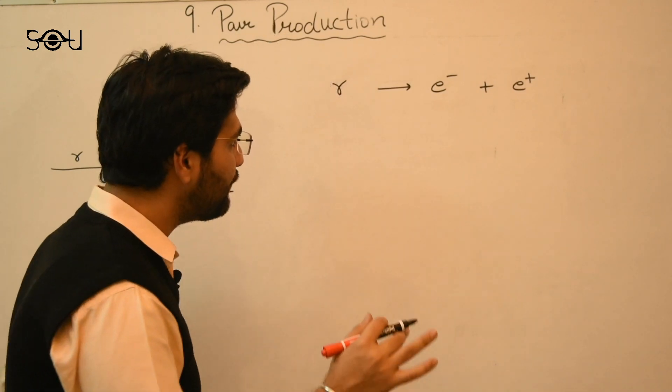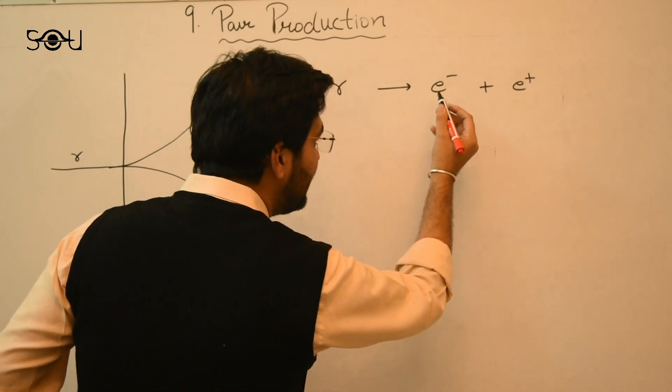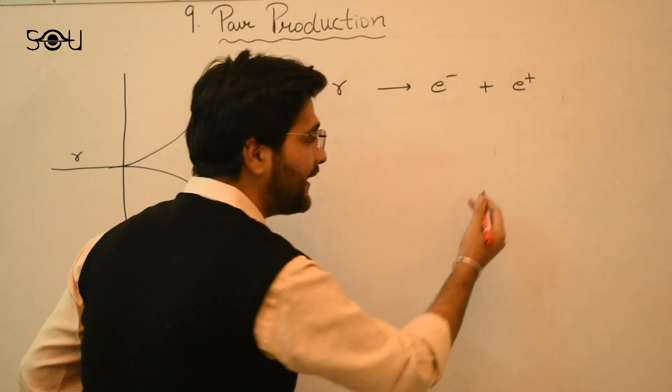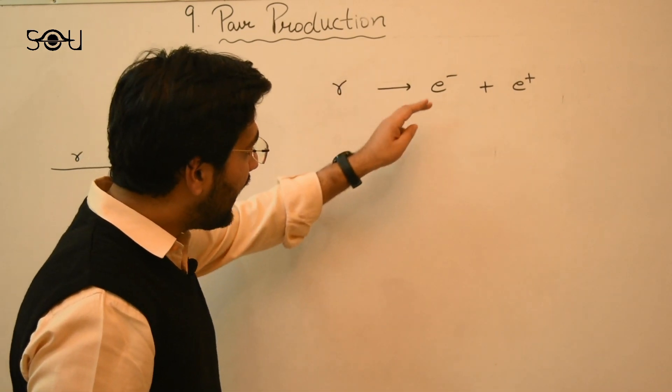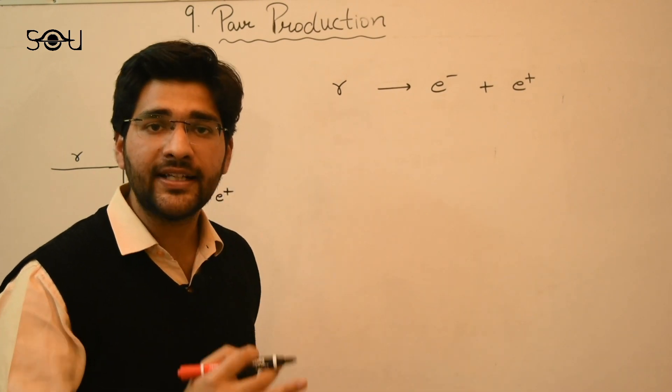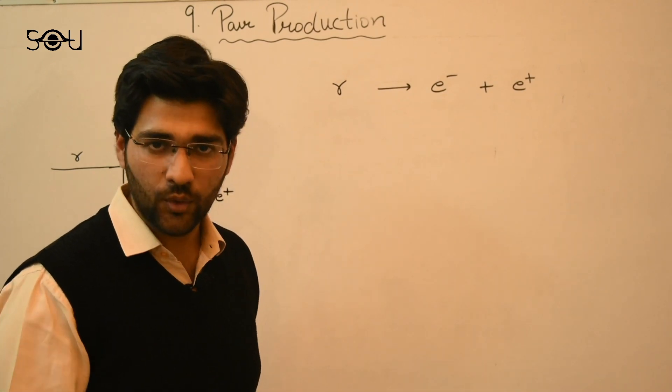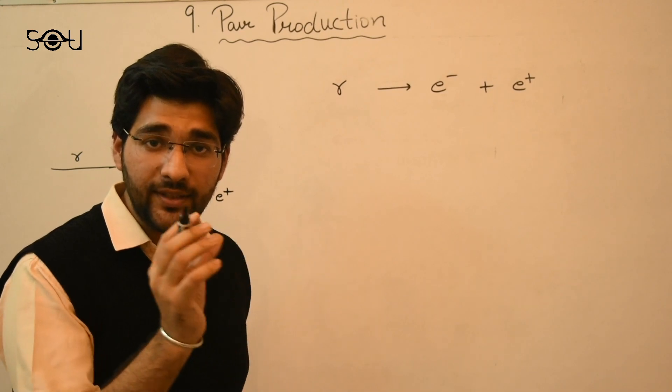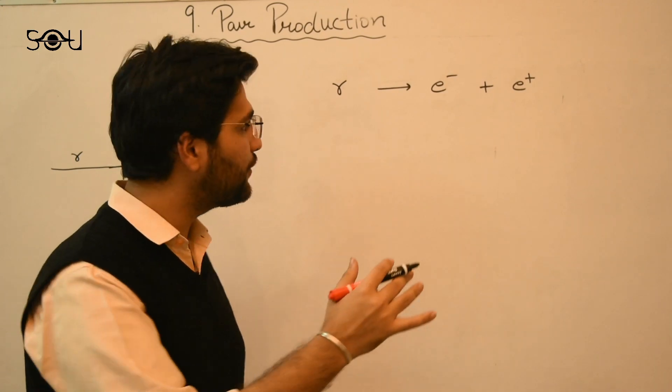For that we have to consider that the electron and the positron that is created after the gamma ray photon disintegrates, they have the kinetic energy equal to zero. In this way only we can calculate the minimum energy that is required to produce the pair.